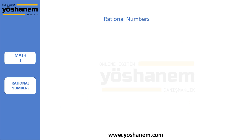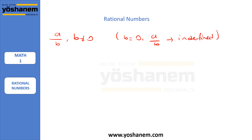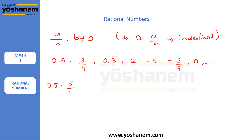Rational numbers: a rational number that can be written as the ratio of two integers. We could write a ratio like a fraction a over b, as long as b is not 0. Remember, if b is 0 then a over b is undefined. A rational number could be 0.5, 3 over 4, 0.3 repeating, 2, negative 5, negative 3 over 7, 0, and so on. They are rational because we can write them — for example, 0.5 is 5 over 10. This is a rational number because it has two integers.